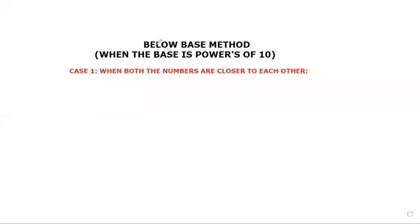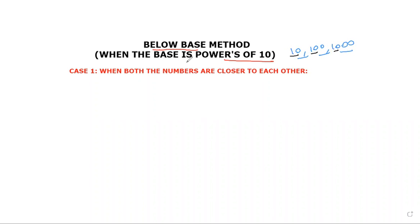First we will see how to solve problems using the below base method. I have first considered when the base is powers of 10 — that means 10, 10 squared (100), 10 cubed (1000). In the case of powers of 10, your base digit will be only one, so it will be very easy to do the multiplication.